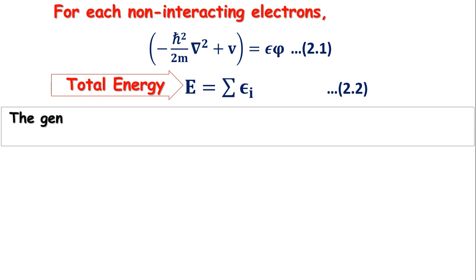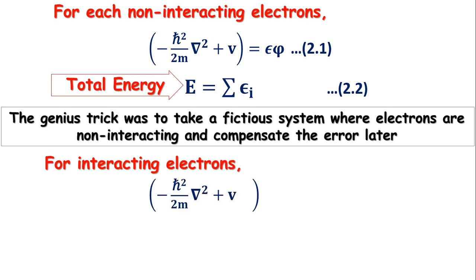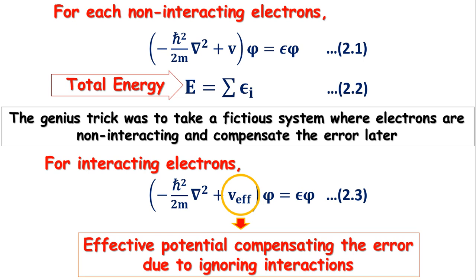The real genius trick played was to take a fictitious system in which the electrons are non-interacting, and the error that will be introduced because of real interaction between electrons will be compensated later. So the equation given by Kohn and Sham for interacting electrons is: minus ℏ² ∇² / 2m plus V_effective times ψ equals ε times ψ. This is our equation number 2.3, where V_effective is the effective potential felt by each fictitious non-interacting electron, and actually is the term that makes the error up. By changing V to V_effective, the Schrödinger equation remains exactly the same.